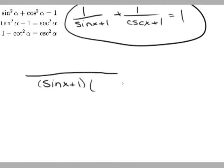multiply cosecant x plus 1, and on the top, you would multiply by the other terms, so then you would have cosecant x plus 1, plus sine x plus 1.